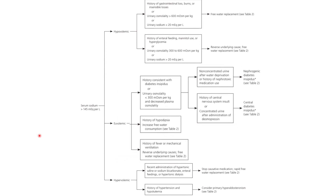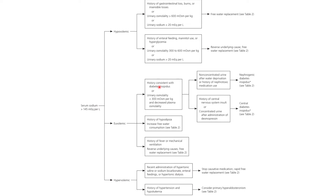If the patient appears euvolemic with low urine osmolality under 300 and increased urine output, consider diabetes insipidus — confirm with a water deprivation test, then give ADH and check the response to distinguish central from nephrogenic DI. If the patient has hypodipsia due to old age or dementia, give free water at regular intervals to prevent hypernatremia.